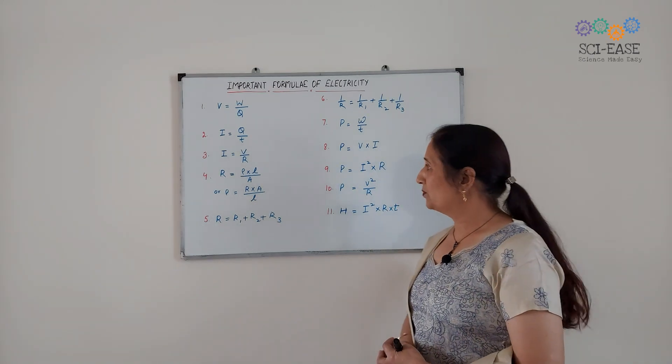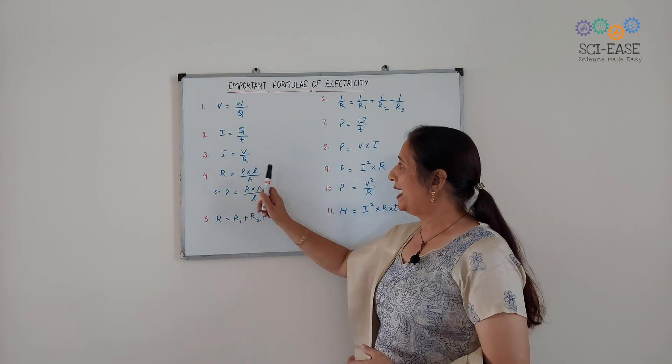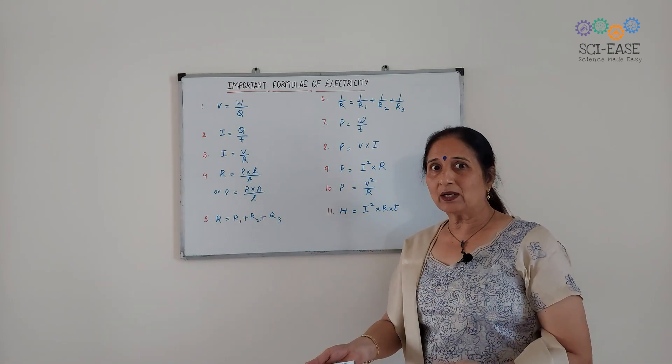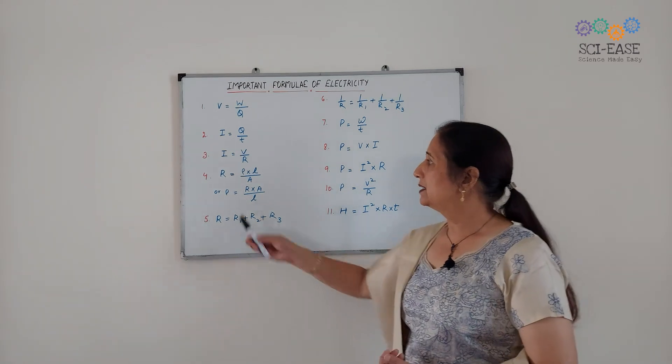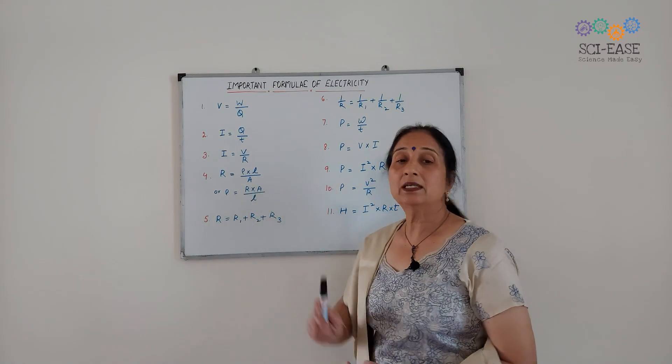Now the fourth one: R equals rho into L over A. And if we are to calculate rho, then rho will be equal to R into A over L.